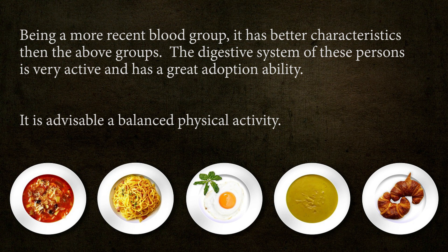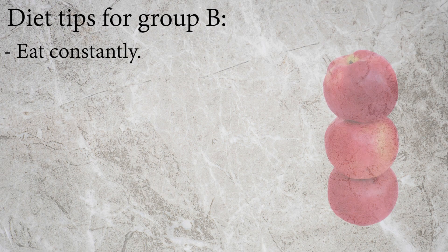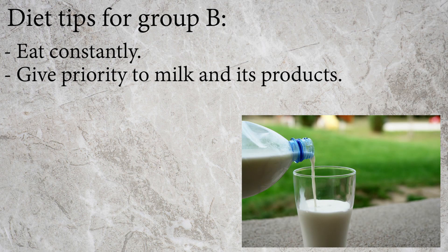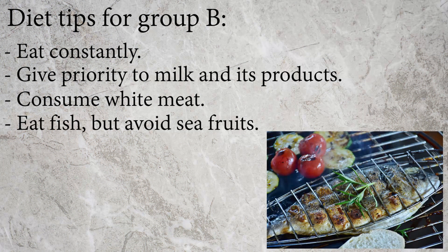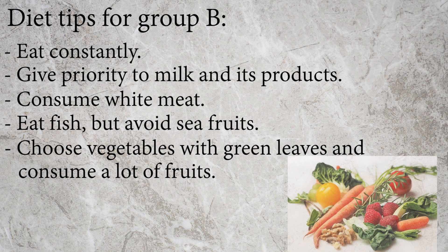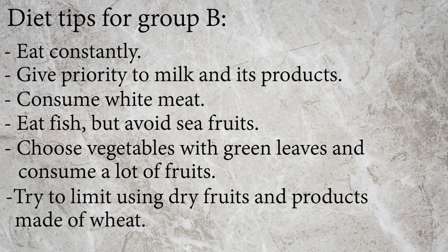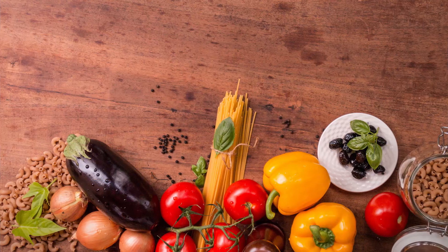Group B, being a more recent blood group, has better digestive characteristics — a very active digestive system with great adaptation ability. A balanced physical activity is advisable. Diet tips: eat constantly; give priority to milk and its products; consume white meat and fish but avoid seafood; choose green leafy vegetables and eat plenty of fruits; and limit dry fruits and wheat-based products.